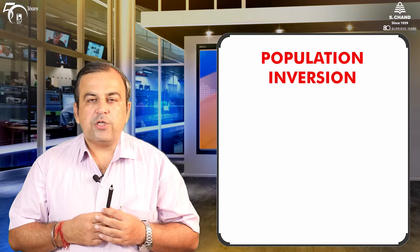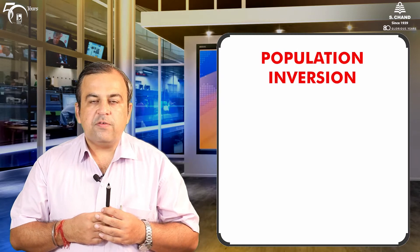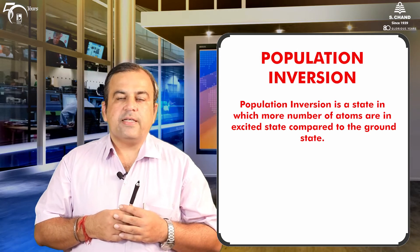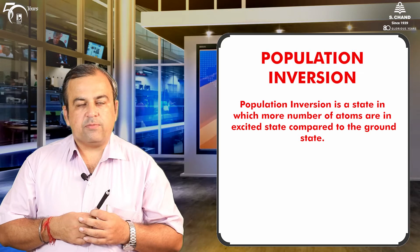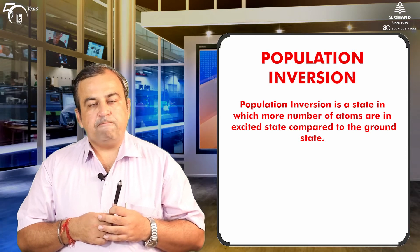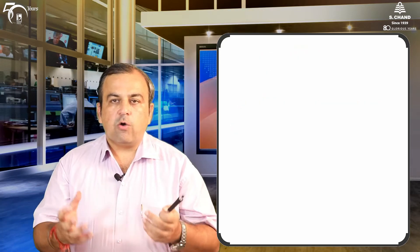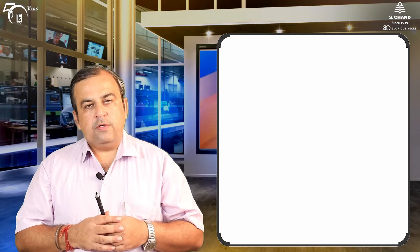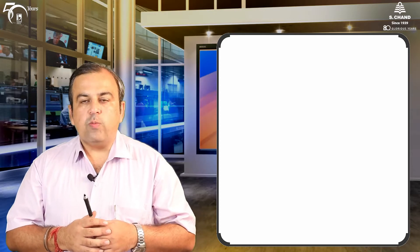What exactly we need to do is achieve the condition of population inversion. Population inversion is achieved when the number of atoms in the excited state is more than the number of atoms in the ground state. So first, we should look at the construction of the Ruby laser.